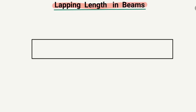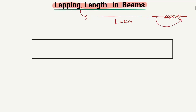There are two different criteria for the lapping length of the steel bars in beams. First of all, why do we provide lapping? Because the standard length of the steel bar is 12 meters, but when we want to construct a building that is longer or higher than 12 meters, we overlap the steel bars by different methods in order to transfer the load from one steel bar to another.